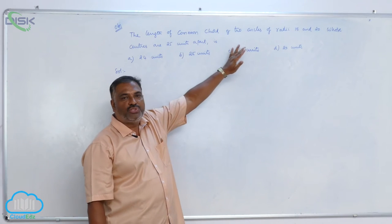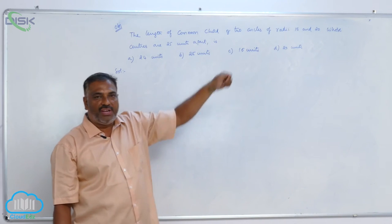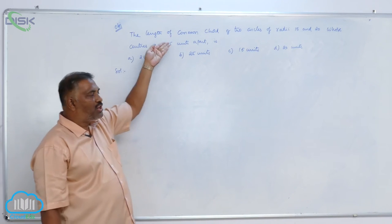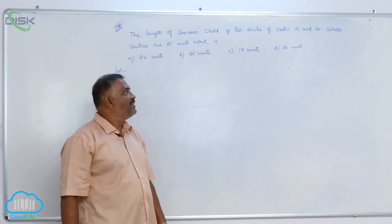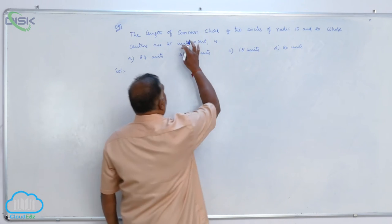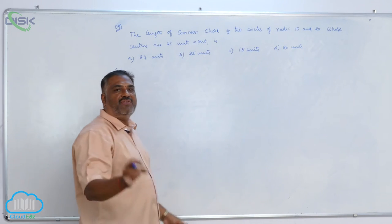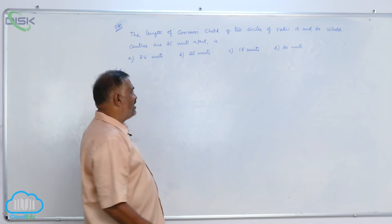The length of the common chord of two circles of radii 15 and 20 whose centers are 25 units apart. Now, no doubt common chord is possible whenever the two circles intersect each other.